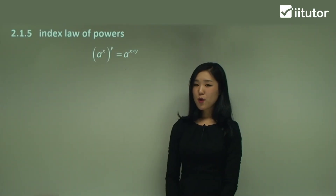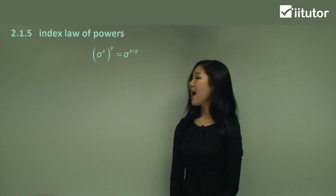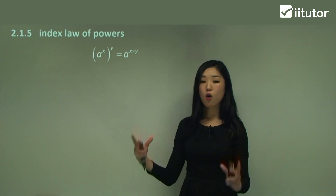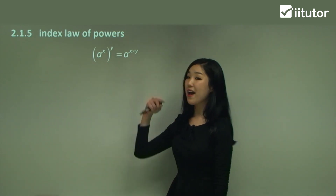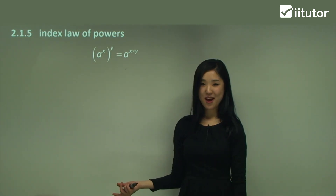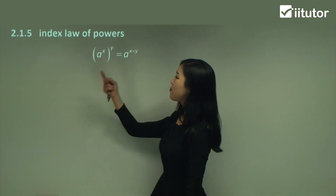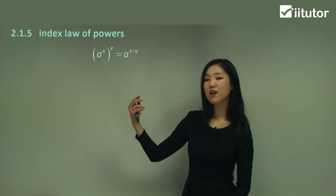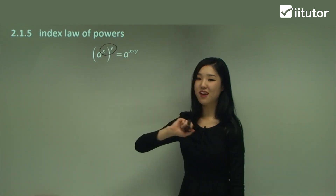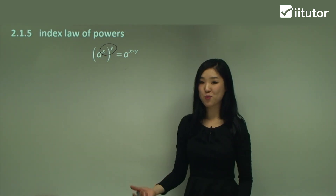Now we'll look at the index law of powers — powers and indices. Have a look at this one here. It has a to the power of x, the whole thing to the power of y again. So we're using brackets. You can see that a to the power of x to the power of y — what we do is simply multiply these two numbers together. So we go a to the power of x times y.